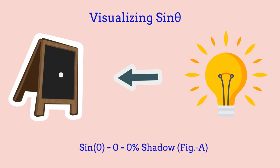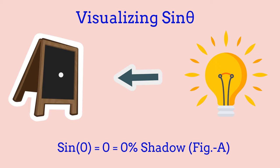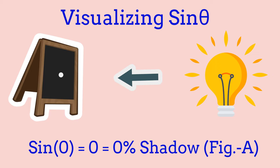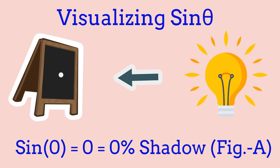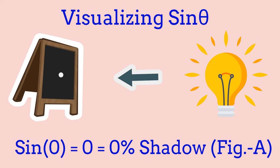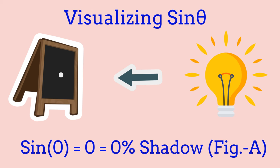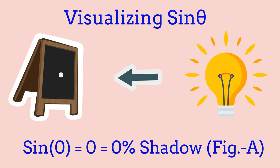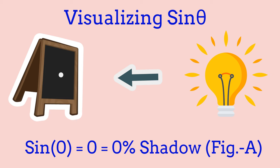Now let's visualize sin theta. Sin theta is the projection of the hypotenuse onto the perpendicular side. When theta is equal to 0, the projection on the vertical face is also 0, as shown in figure A — the light shines directly and shows as a dot, so sin 0 is 0.